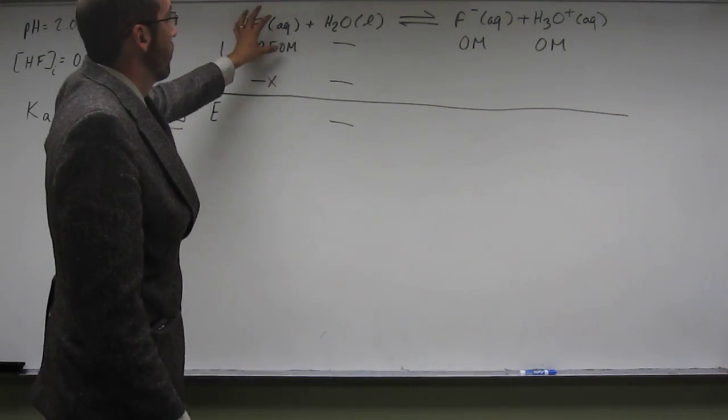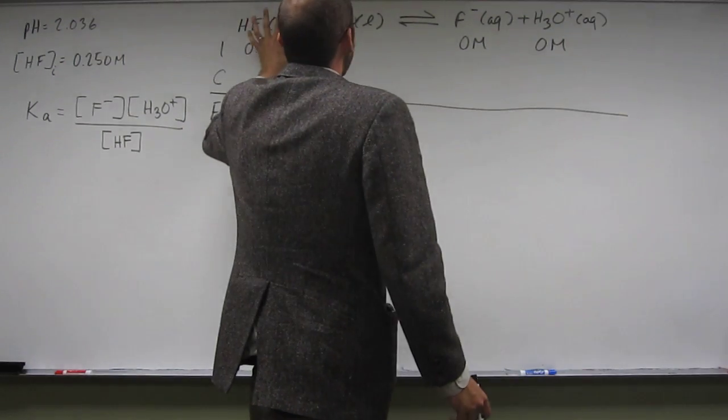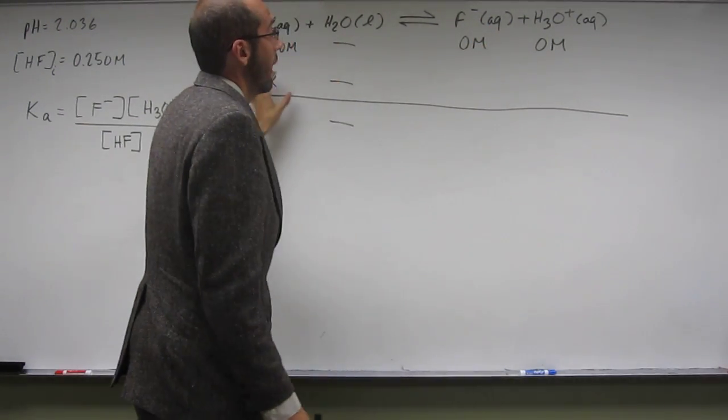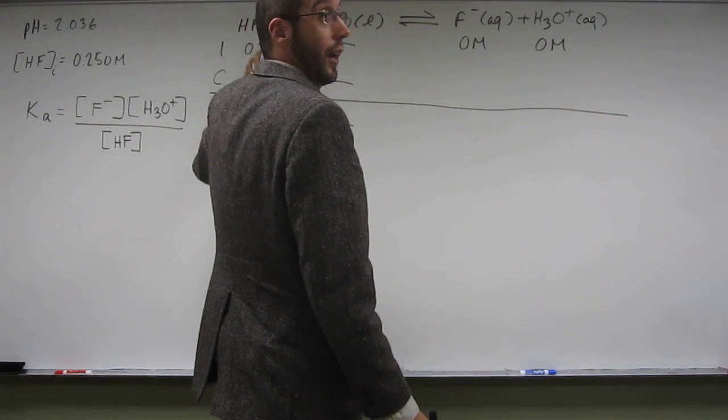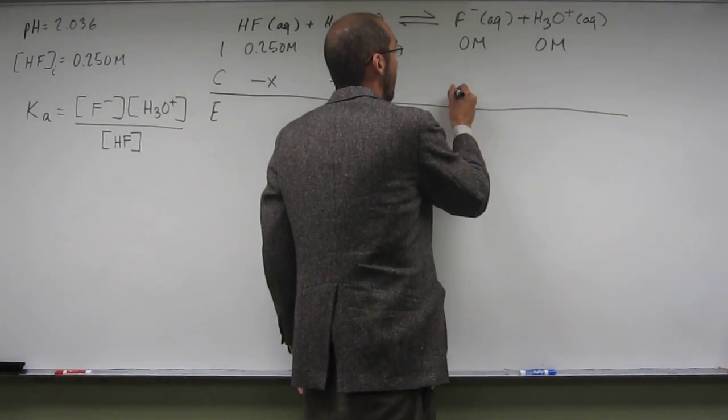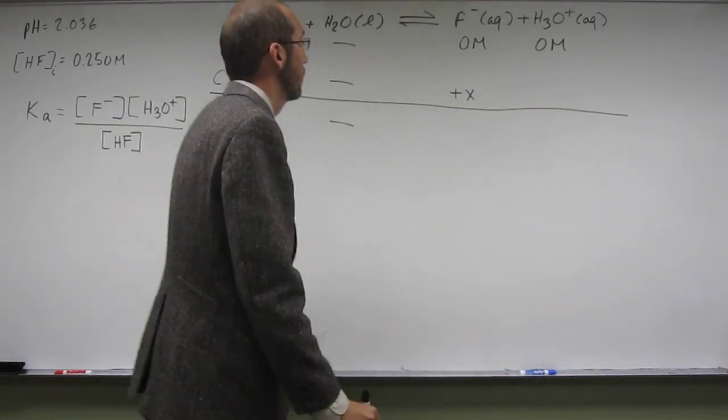Okay? So since we have a 1 to 1 ratio of HF to F minus, right, this F minus increased as much as this HF decreased. So we're going to put a positive X there.